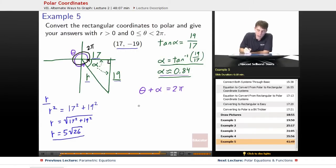Theta plus alpha equals 2 pi. What's our alpha? We have our alpha is 0.84. So theta plus 0.84 equals 2 pi. I prefer to write it as theta equals 2 pi minus alpha, then we'll substitute in. So we have theta equals 2 pi minus 0.84, which gives us theta is approximately equal to 5.44 for our value here.